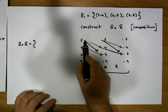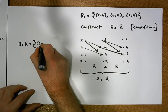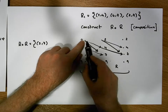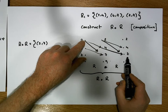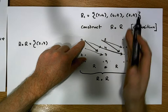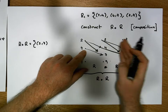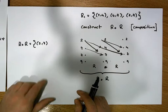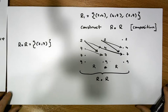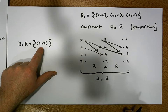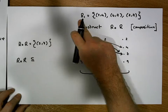Two goes to four goes to seven, so I can go directly from two to seven — giving the ordered pair (2,7). I can't go from seven across to the other side, so there's no ordered pair from two into that range. Four goes to seven, but again I can't get across, so the only ordered pair that takes me directly across is (2,7).